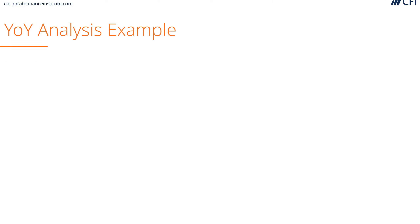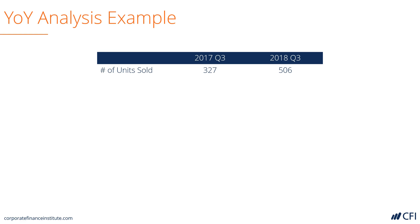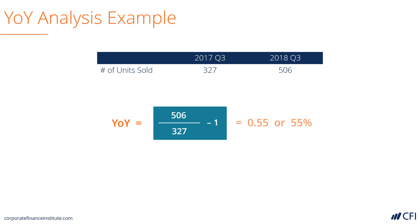Let's look at an example. Here we have a company that has the number of units sold in Q3 of 2017 and Q3 of 2018. The year-over-year analysis takes the ending number divided by the prior period number minus 1 to get a year-over-year growth rate of 55%.